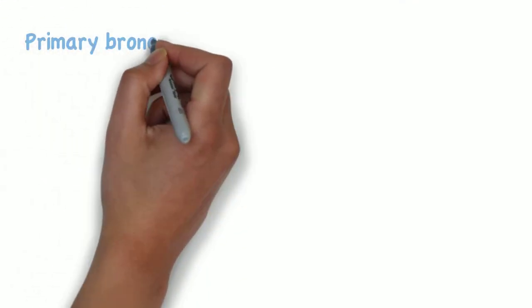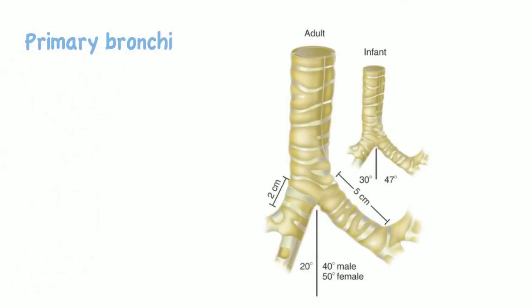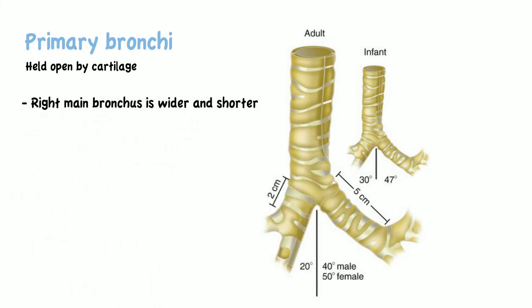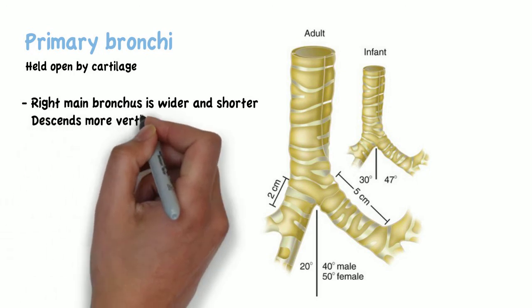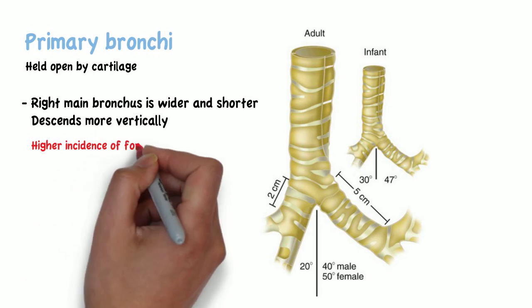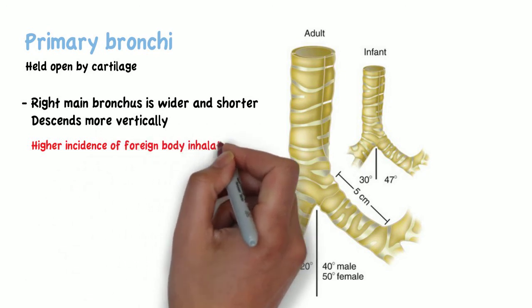The primary bronchi separate the air that goes to the left and right lung and are also held open by cartilage. The right main bronchus is wider and shorter than the left main bronchus and descends more vertically. Clinically, this results in a higher incidence of foreign body inhalation on the right side.